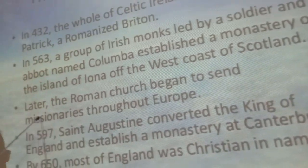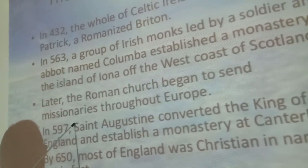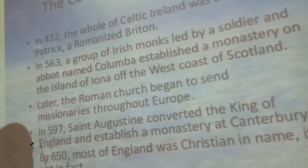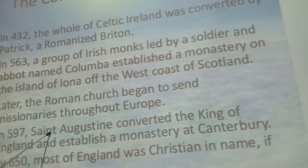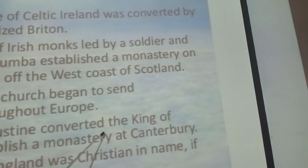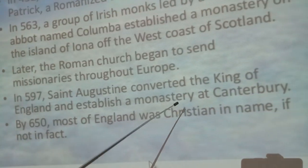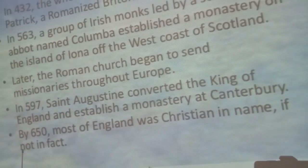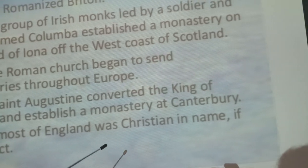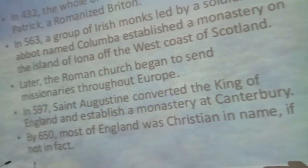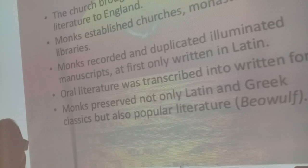Later, the Roman Church began to send missionaries. Augustine converted the King of England and established a monastery at Canterbury. By 650, most of England was Christian. Christianity brought literature to England — monks established churches, monasteries, and libraries. Monks recorded, duplicated, and illuminated manuscripts, at first only written in Latin.